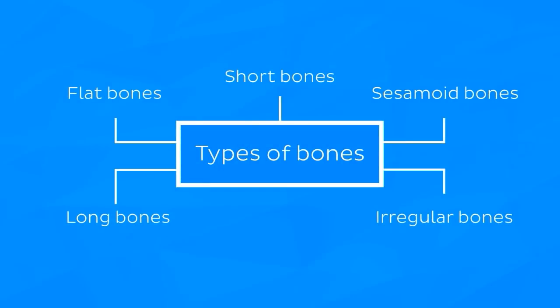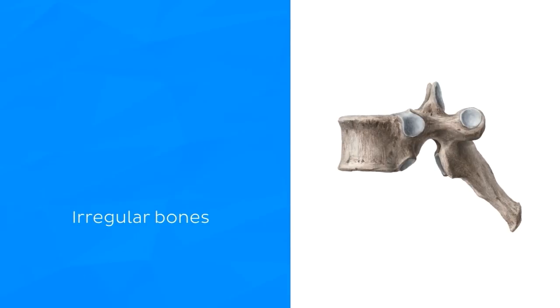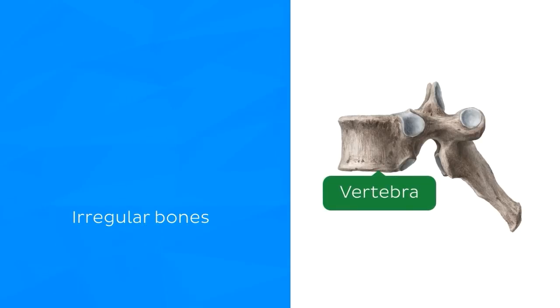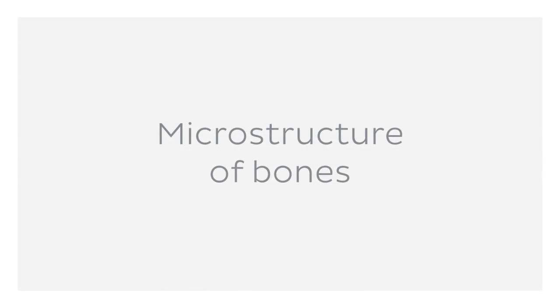And finally, irregular bones are those odd-shaped bones that do not resemble any particular shape, and just don't fit into any of the other groups mentioned previously. The bones of the spinal column, like this vertebra here, are examples of irregular bones. Now let's put these bones under a microscope and see what's really going on in there. We're going to go over the types of tissue that make up bones, how their matrix is organised, and the cells found within them.